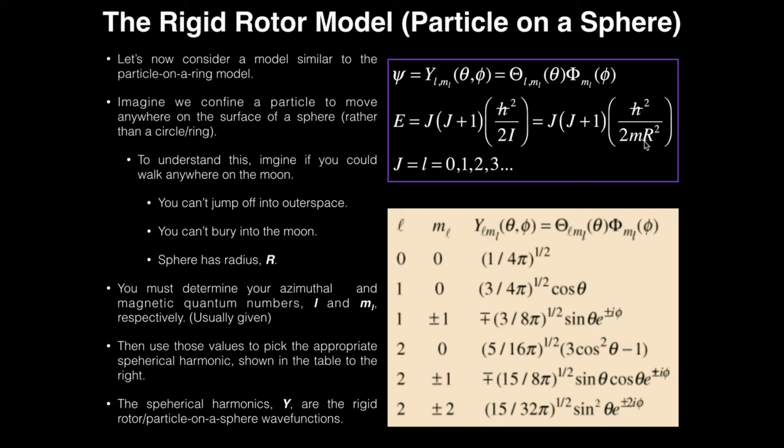And you just plug that in and square it. So if you wanted to calculate the energy of this particle that is confined to a sphere, the surface of the sphere, you take h-bar squared divided by 2 divided by the mass of the particle, and then divide by the square of the radius of the sphere.